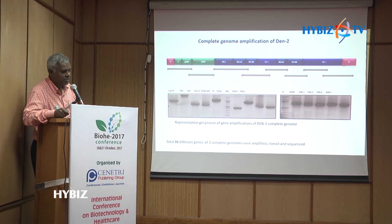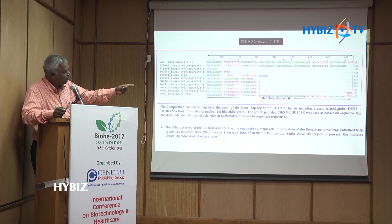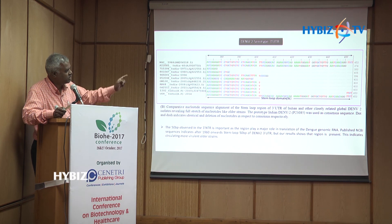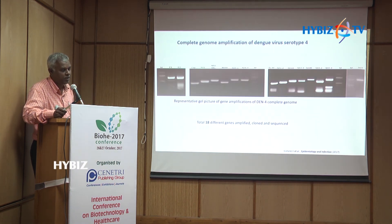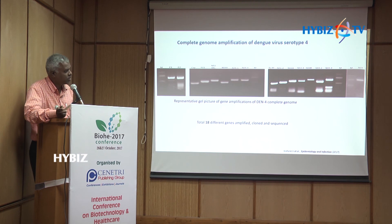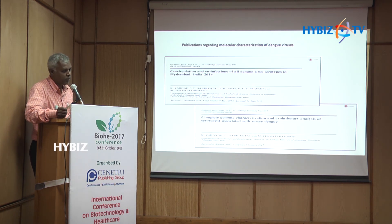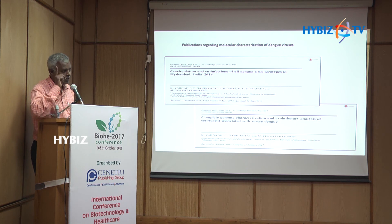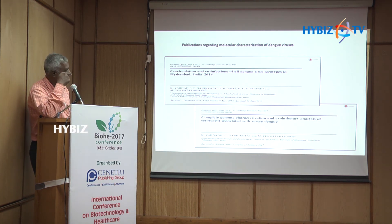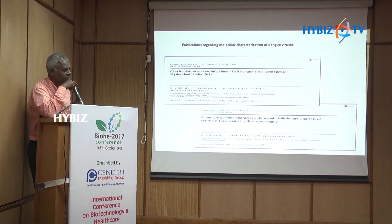Similarly, we sequenced serotypes 2 and 4, and in both cases also found the continuous stretch in the UTR, which is missing in contrasting sequences from the Indian side. In India, only two complete genome sequences for these serotypes exist, and ours is the second one. We have published some of this data. Thank you very much.